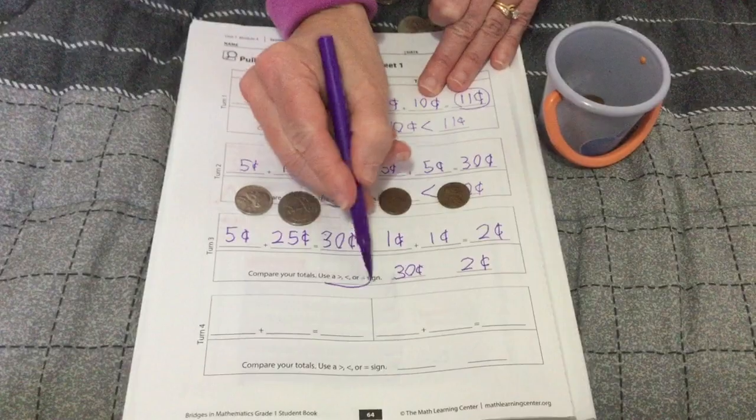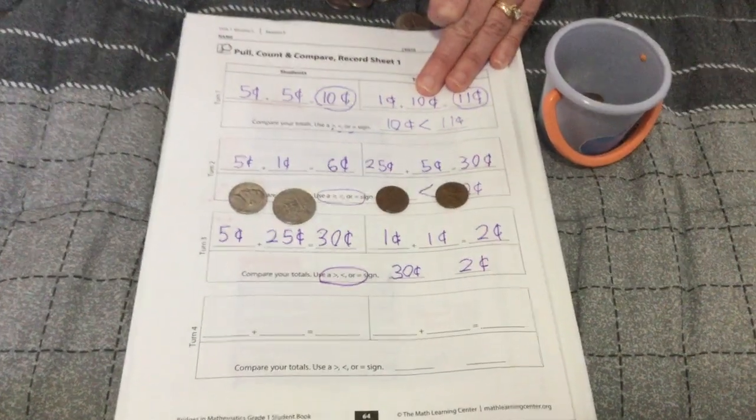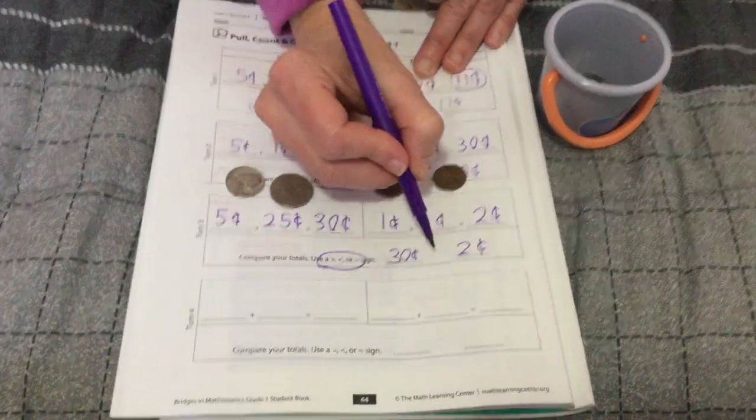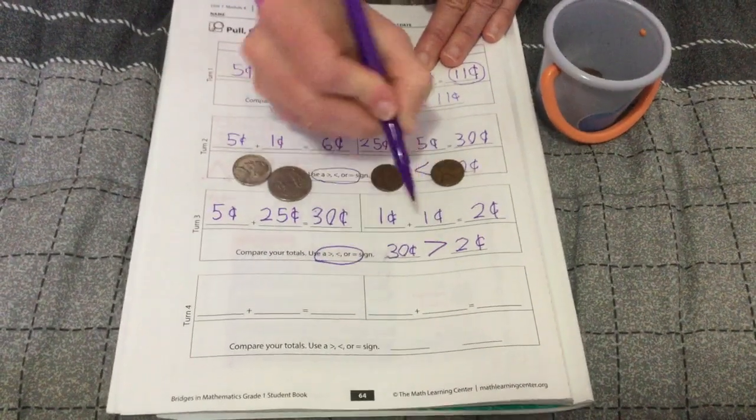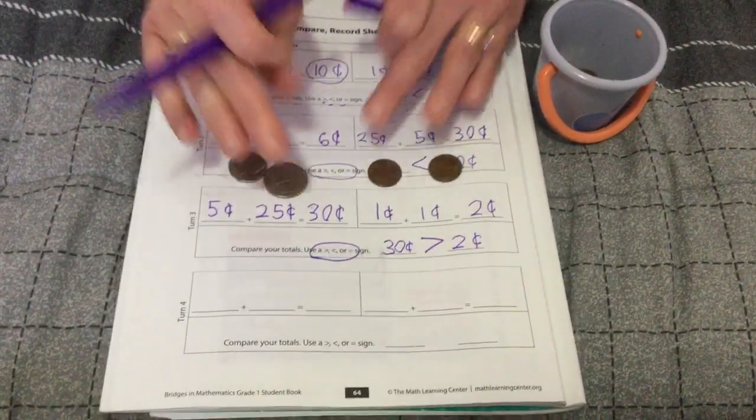Go ahead, use the right symbol. Pause the video if you need more time to think about it. Did you come up with thirty is greater than two cents? I bet you did.